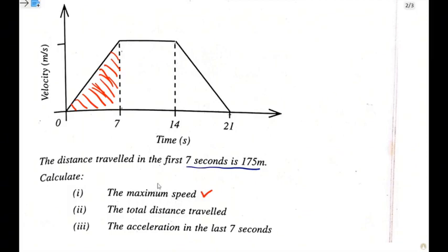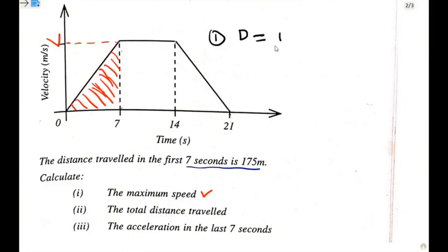So how can you find the maximum speed? To find the maximum speed, it is going to be presented on this side. In order to find this maximum speed, you need to treat this as your triangle. What you do is assume that you are finding the distance under this triangle. The formula we use when finding the area under a triangle is: distance is equal to half times B times H.